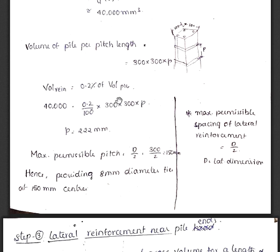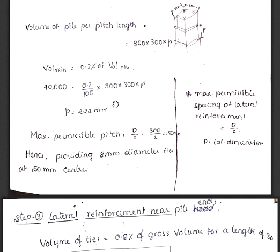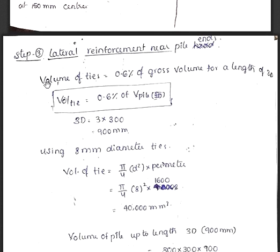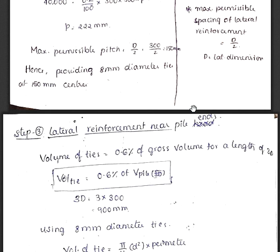We can get the value of P here, 0.2% of the volume of pile. The maximum permissible pitch according to the guidelines we have is D by 2, that is lateral dimension by 2, that is 300 by 2, that is 150 mm. What we got here? 222 mm. This is more than the permissible value. So we have to consider the maximum permissible value of 150 mm. Let us provide 8 mm diameter ties at 150 mm center to center. This is the lateral reinforcement near pile.